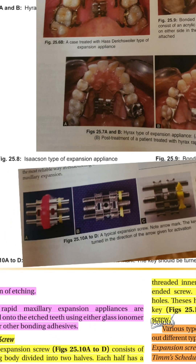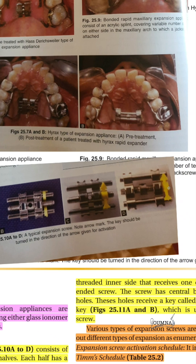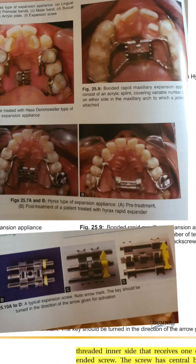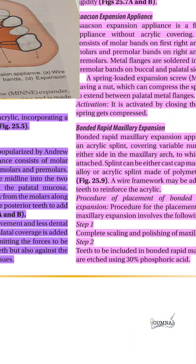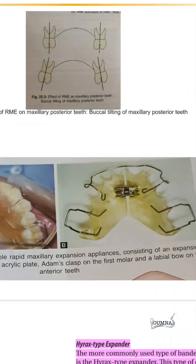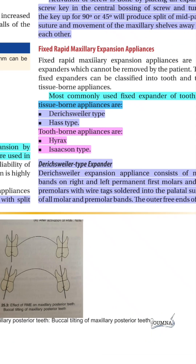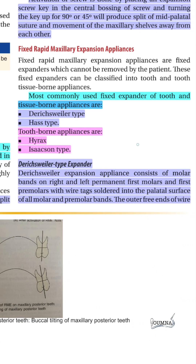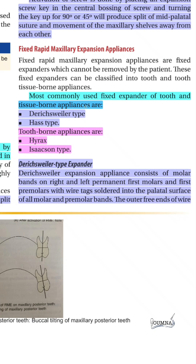These are the types of expansion screws, with an arrow indicating the direction of rotation. Fixed appliances for rapid expansion are divided into two categories: tissue-borne appliances, of which there are two types, and tooth-borne appliances, which also have two types.